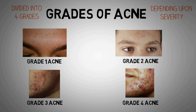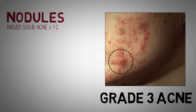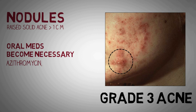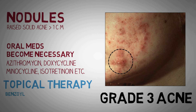From grade 3 acne onwards, things get serious — you have nodules on your face and you have to start taking oral medications. The most commonly used drugs worldwide are azithromycin, doxycycline, minocycline, or isotretinoin among others. Which drug you should take depends upon a lot of factors, which is why I always recommend consulting your local practitioner or MD in dermatology before taking any medicine. Topical medicines remain the same: benzoyl peroxide combined with salicylic acid, azaleic acid, and retinoids like adapalene applied twice daily.